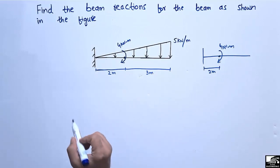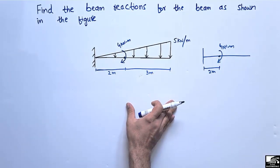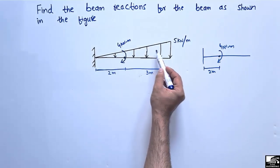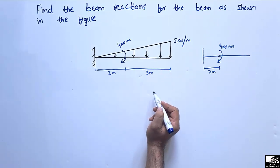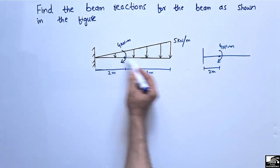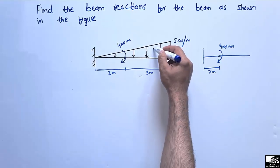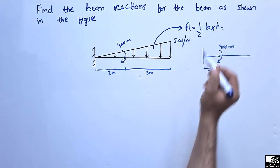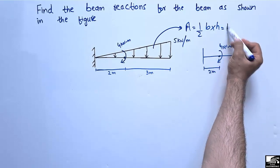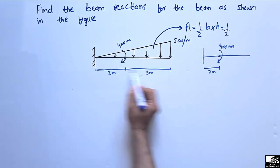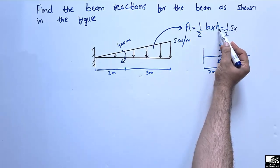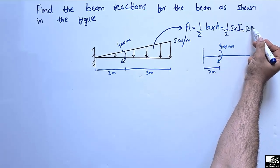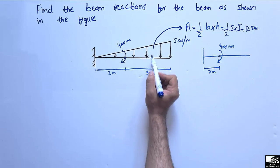The first step is to find out the equivalent concentrated load acting on this beam. Since this is a uniformly varying or triangular load, we convert it into a concentrated load by finding the area of the triangle. The area is half times base times height. The base is 2 plus 3 equals 5 meters, and the height is 5, giving us 12.5 kilonewtons.